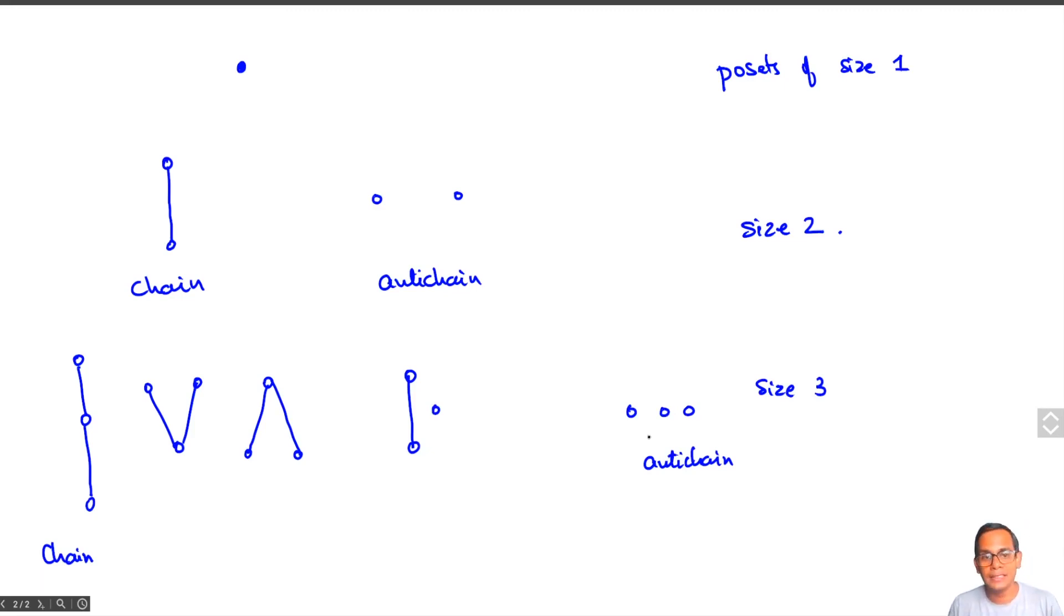It turns out that there are 16 partially ordered sets of size four. Can you draw all their Hasse diagrams?